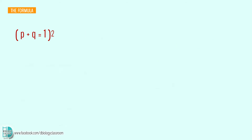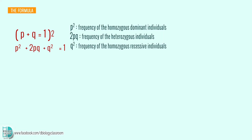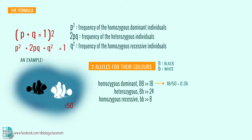Now let's expand the formula by squaring it. You get p² plus 2pq plus q² equals 1. p² represents the frequency of homozygous dominant individuals, 2pq is the heterozygous individuals, and q² represents the frequency of homozygous recessive individuals. Using the same example: homozygous dominant is 18 over 50 equals 0.36, heterozygous is 24 over 50 equals 0.48, and homozygous recessive is 8 over 50 equals 0.16. When you put these values into the formula, the sum equals 1.